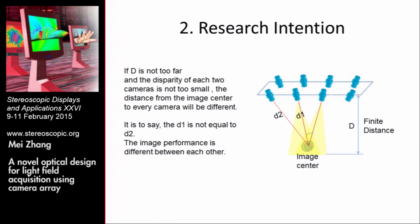For sensor array cameras, there is another problem. For example, if we place the object not far from the sensor array, and the disparity between each two cameras is not too small, then the distance from the image center to every camera will be different — that is, D1 is not equal to D2. Therefore, the image performance of the two cameras will differ from each other.